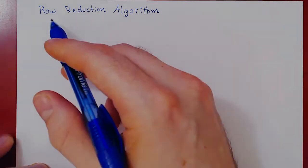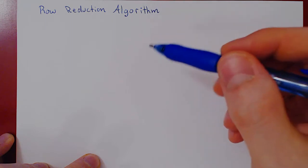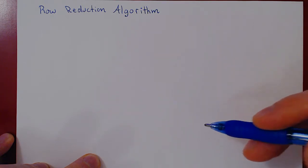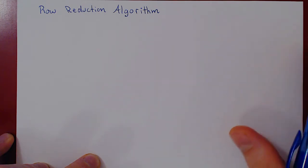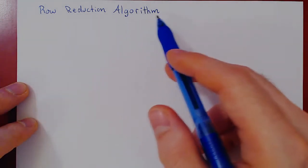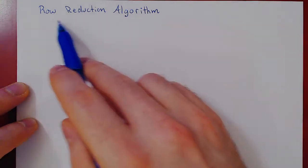In this video we will discuss the row reduction algorithm. An algorithm is simply a finite sequence of operations. We've seen the three types of row operations in our previous video. The question is how do we systematically apply these row operations to solve any linear system in the most effective way? Let's consider this algorithm conceptually, and then I'll show you a simple example. As you go through the following videos, you'll see more complicated examples to reinforce your understanding.